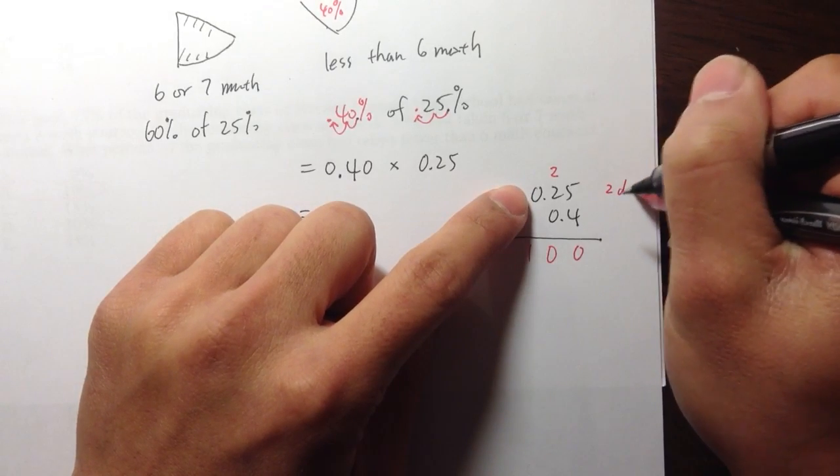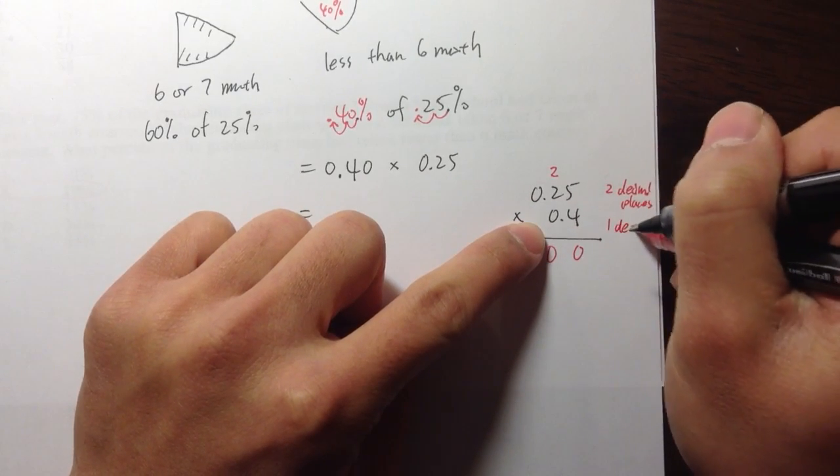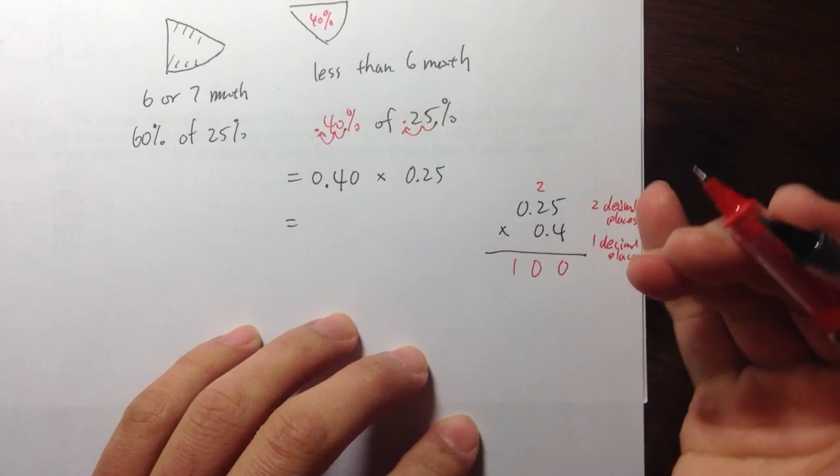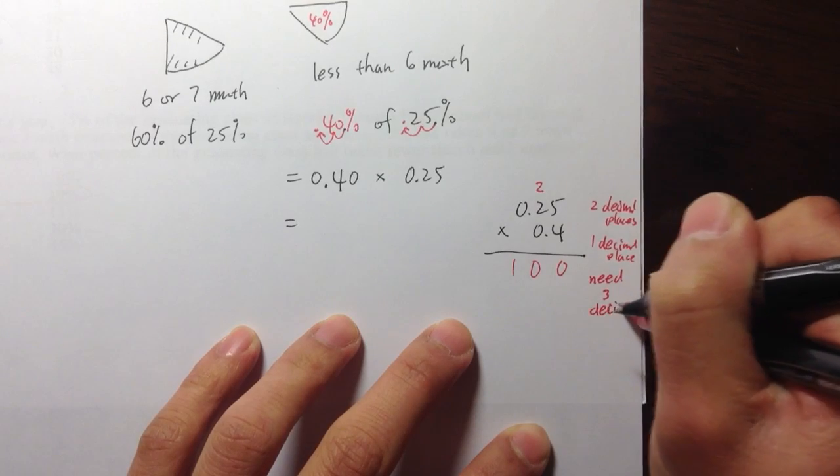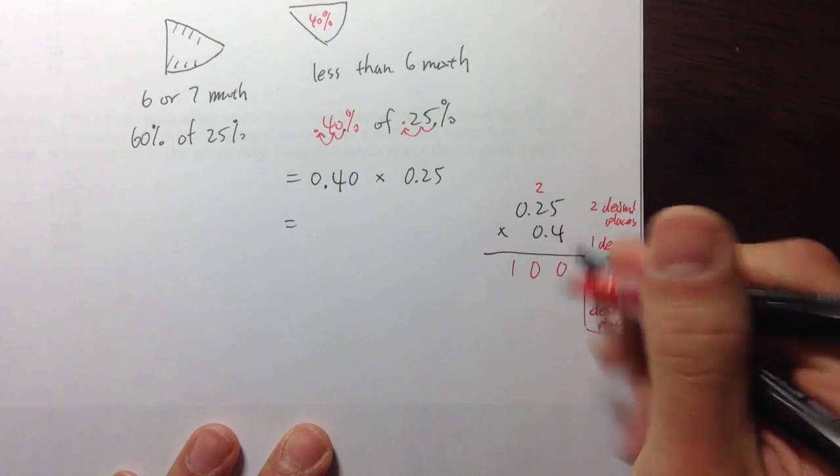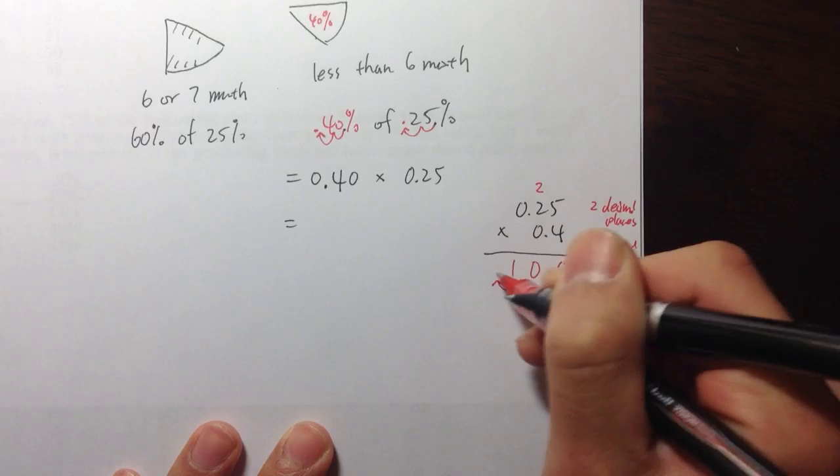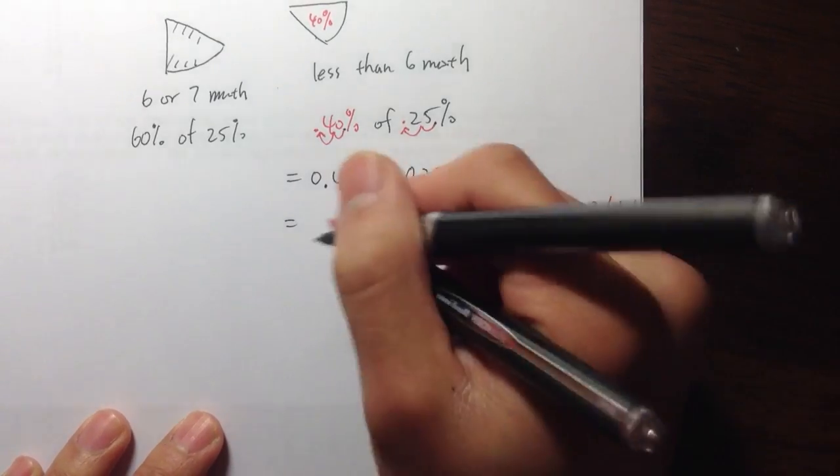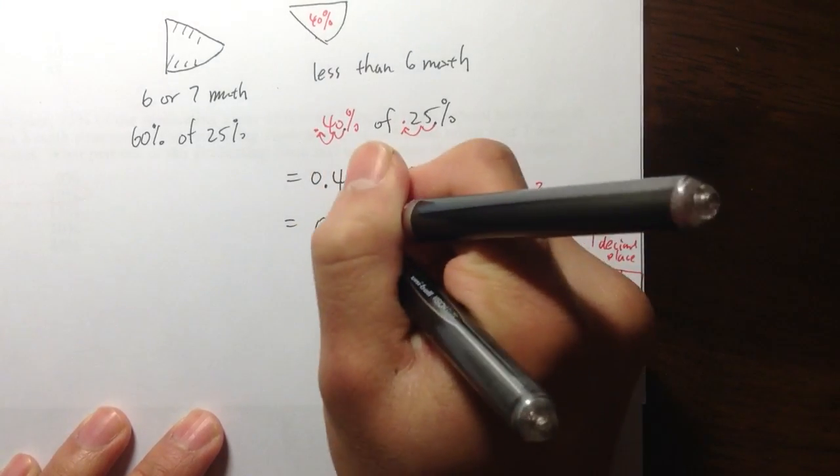Right here, I have two decimal places. Two decimal places for the first number. And then for the second number, I have one decimal place. So the total, 2 plus 1, I need three decimal places for my answer. I have 100. We start off all the way to the right. And then I'm going to move this decimal point once, twice, three times. So let me have a zero in front of that. 0.4 times 0.25 is 0.100.